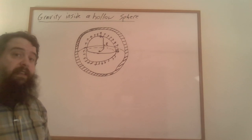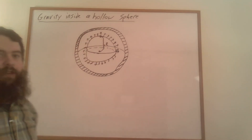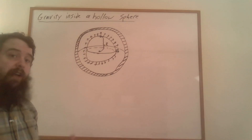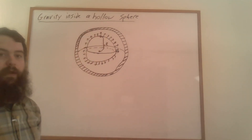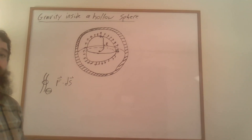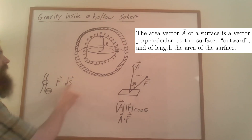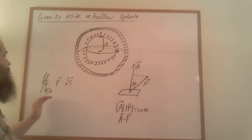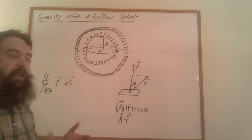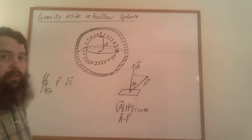Now here's the clever bit that's going to allow us to calculate the magnitude of this gravitational force. We're going to consider the flux integral of this gravitational field through the surface of this imaginary sphere. We're adding up over the surface the gravitational field at each point dot-producted with the area vector for a tiny piece of the surface. These imaginary surfaces that we calculate the flux through are called Gaussian surfaces.